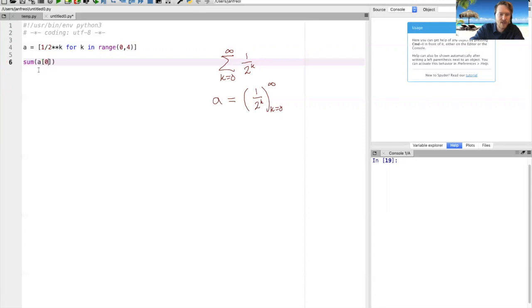Now I can do a slice here if I want some other partial sum. Zero to four gives me the entire thing, three gives me the first three terms, zero gives me zero terms, no terms.